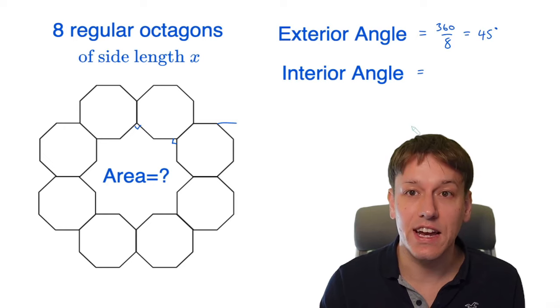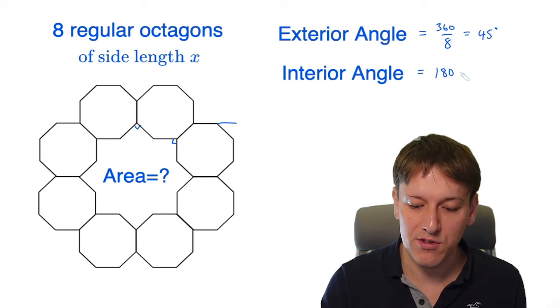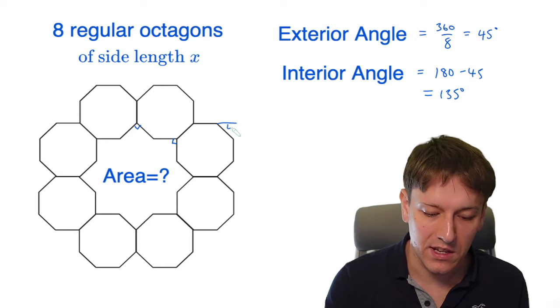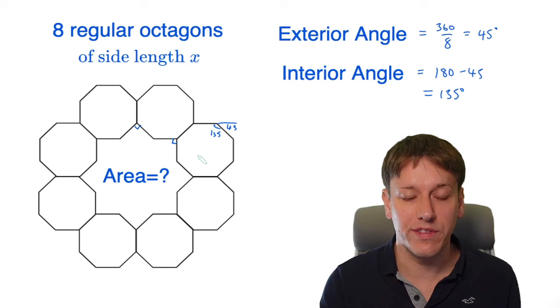And then the interior angle of the octagon is 180 minus 45, which is 135 degrees. So this is 45 and this is 135. And that's true for all of the angles in the octagon.